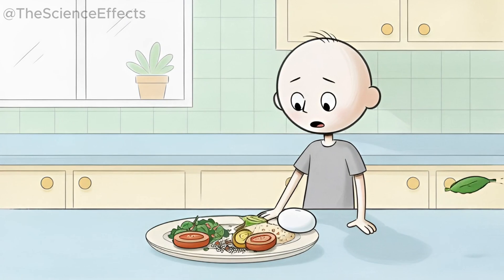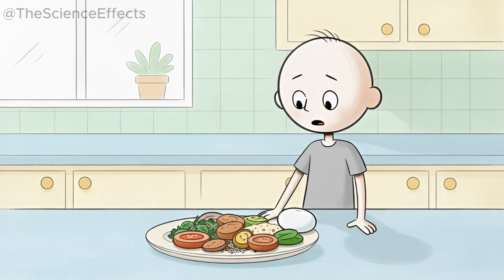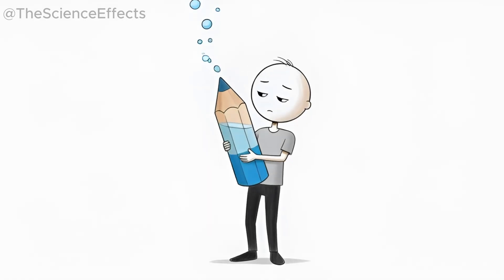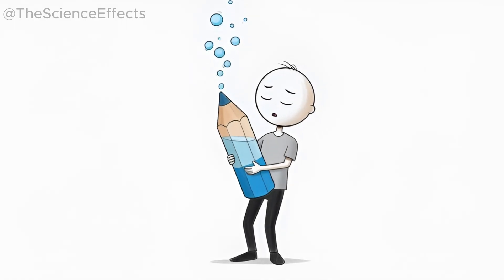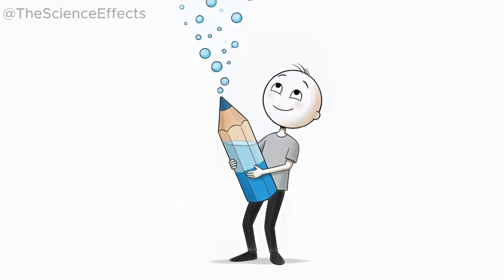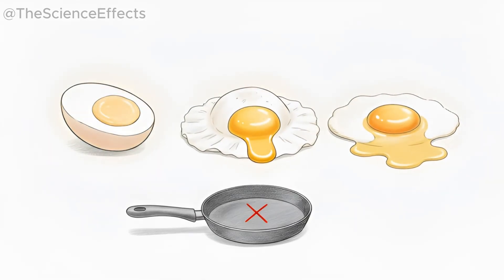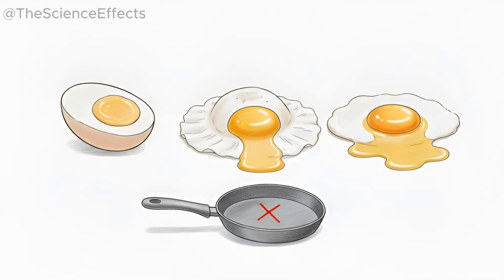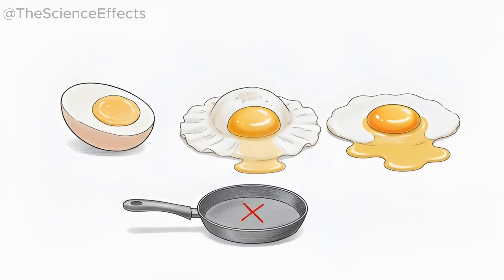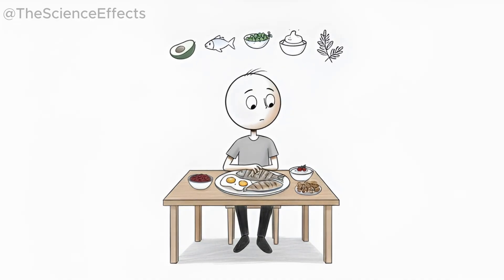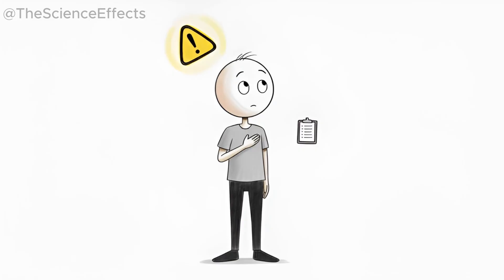Here's how to get the benefits safely: one, pair eggs with fiber—vegetables, oats, or whole grains keep digestion smooth; two, drink more water—protein increases your hydration needs; three, cook lightly—boiled, poached, or soft-cooked retain nutrients; four, add variety—eggs are powerful but not meant to be your only protein source; five, listen to your body.